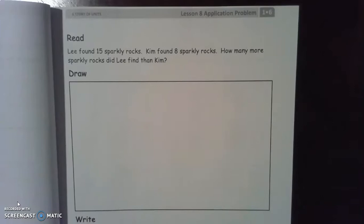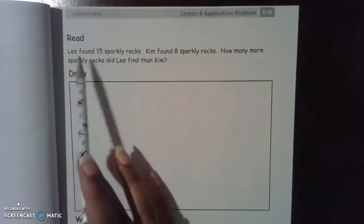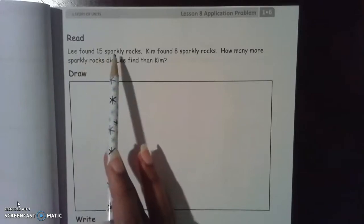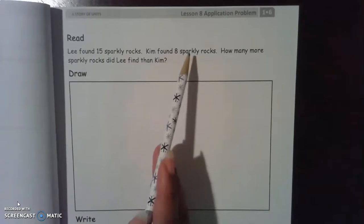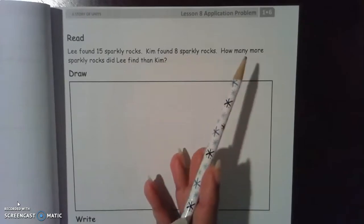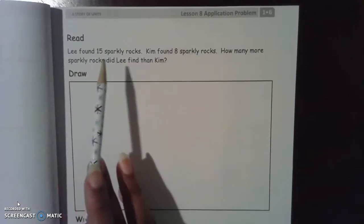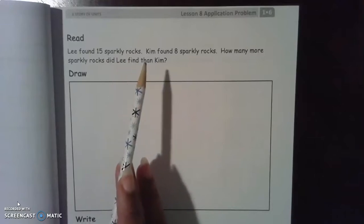I'm going to read the problem first, and then we'll read it together, and then we'll figure out this thing. So everybody go ahead and close your eyes as I read it first. Lee found 15 sparkly rocks. Kim found 8 sparkly rocks. How many more sparkly rocks did Lee find than Kim?